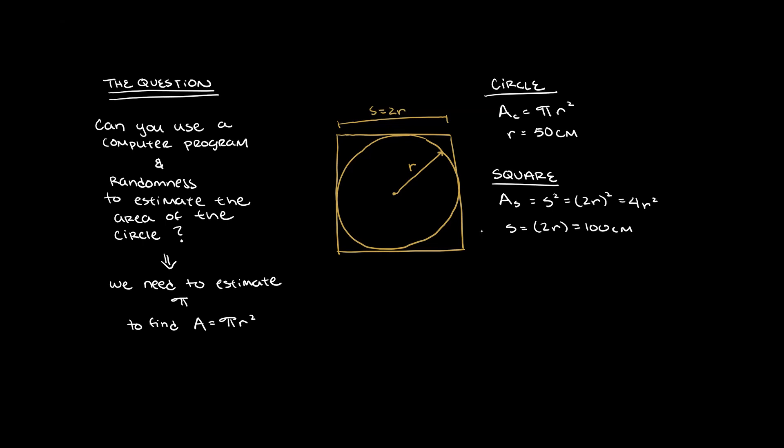Now what is the area of the square? Exactly. With a side length of 2 times R, the area is 4R squared. Since the circle is inscribed in the square, that means the square has a side length of 100 centimeters.